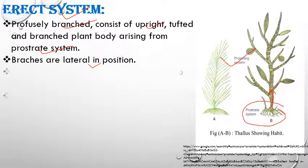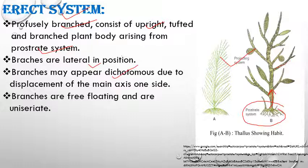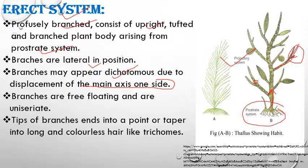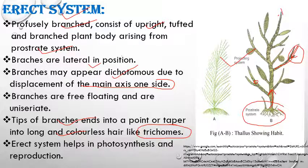The branches may appear dichotomous — one branch bifurcates into two branchlets — due to displacement of the main axis to one side. The branches of the erect system are uniseriate, meaning they are made of a single row of cells. The tips are pointed or tapered and form long, colorless hair-like trichomes. The main function of the erect system is photosynthesis and reproduction, as it bears the sporangia.